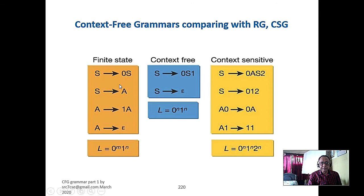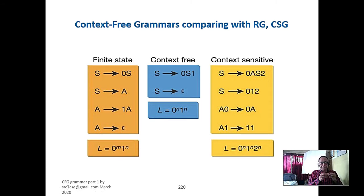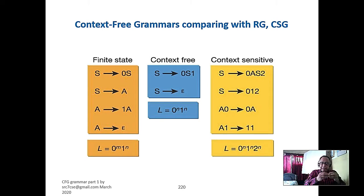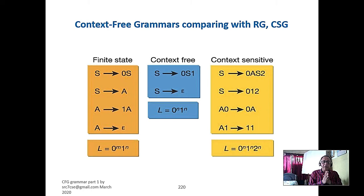This is the finite state machine understandable grammar. Every grammar has a four-tuple; there must be a start variable. Here 0 is the terminal and S is again the variable. Whenever a sentence comes, it may belong to a language or not. If the sentence starts from the start variable with the legal productions and at the end there is no variable — all terminals — then it can be decided by a finite state machine in the accepted state. So that grammar is always a regular grammar.